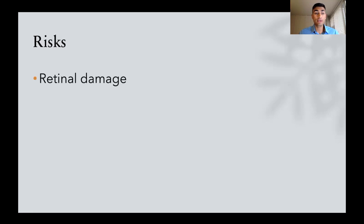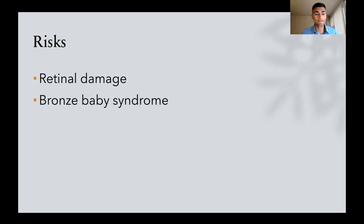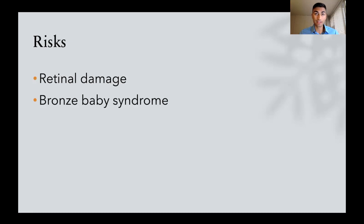So what are some of the risks to consider with phototherapy? The main one to worry about is potential damage to the retina, which is why when the baby is under the lights in that bed, they put eye masks over the baby to protect the eyes. There is another potential complication called bronze baby syndrome, where the baby's skin will turn bluish-gray. This happens when you have a conjugated hyperbilirubinemia resulting from some sort of obstruction in the biliary flow — a different form of bilirubin from the unconjugated form that phototherapy is used for. If there's a conjugated hyperbilirubinemia, sometimes called direct hyperbilirubinemia, phototherapy is contraindicated because of this risk of bronze baby syndrome.